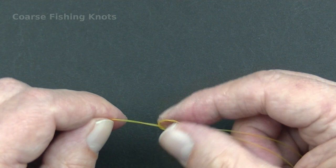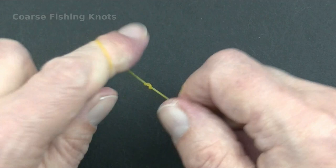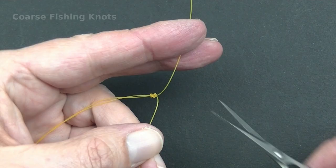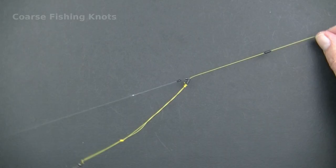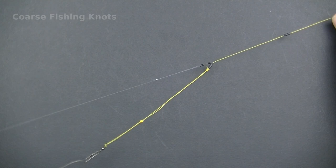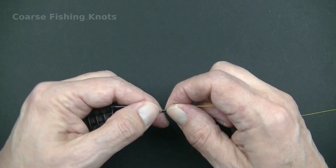The twizzled boom serves two purposes. It provides a length of stiffer line above the feeder to reduce the risk of tangles. Secondly, if a big fish is hooked, the bottom line stop will get pulled down towards the feeder during the fight. The knot in the top of the twizzled boom will prevent the stop and the hook link from getting too close to the feeder.